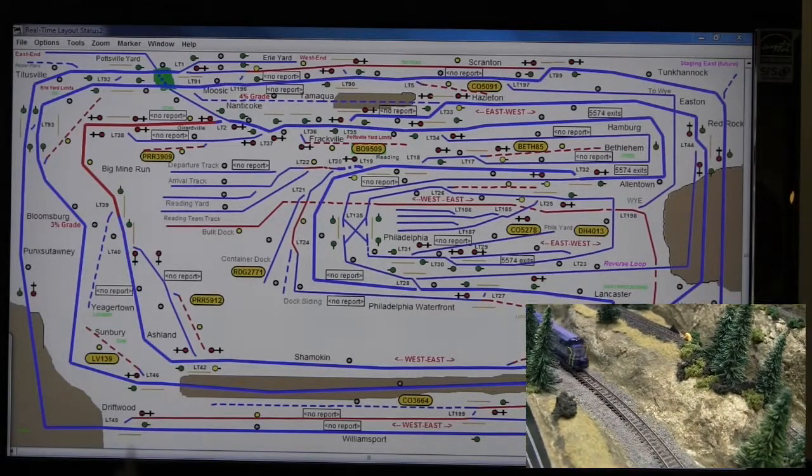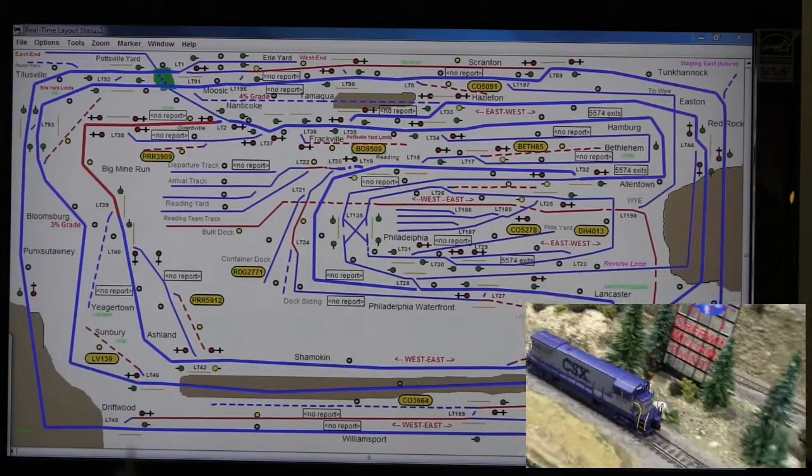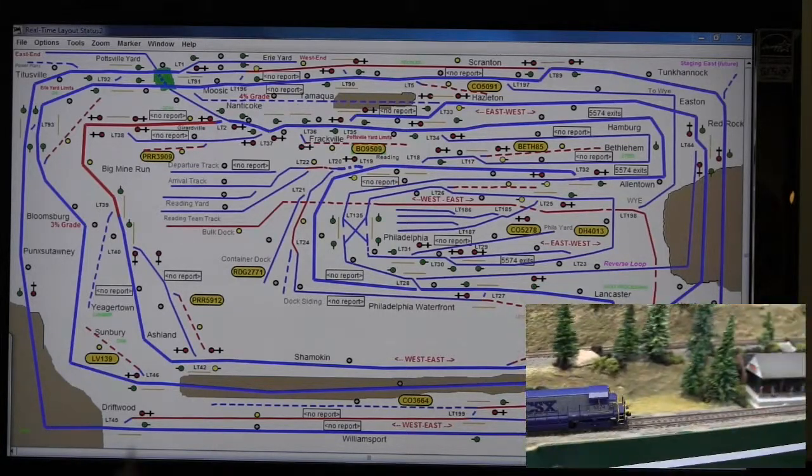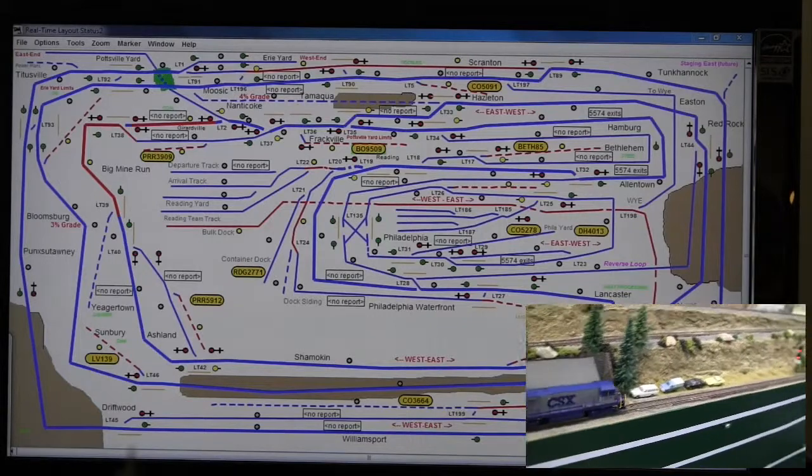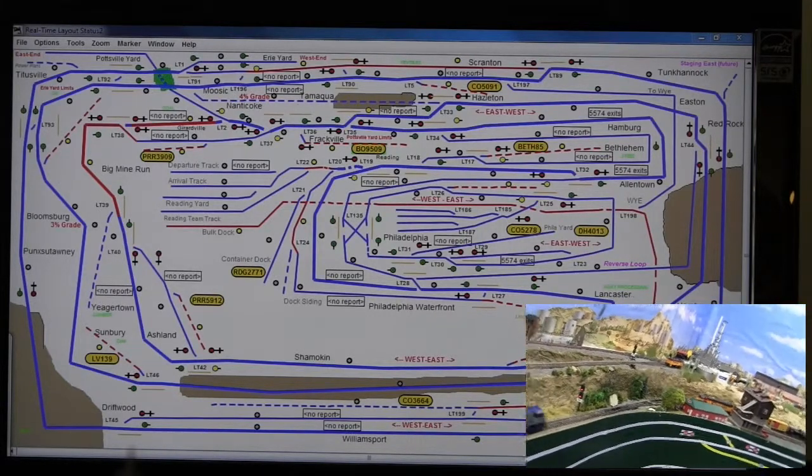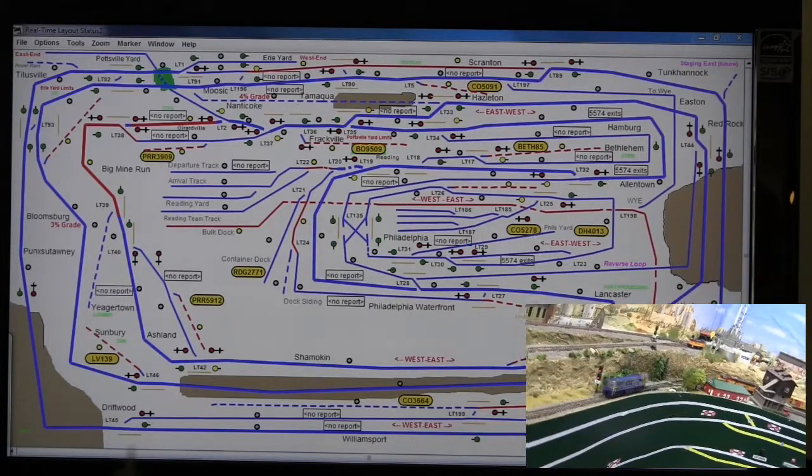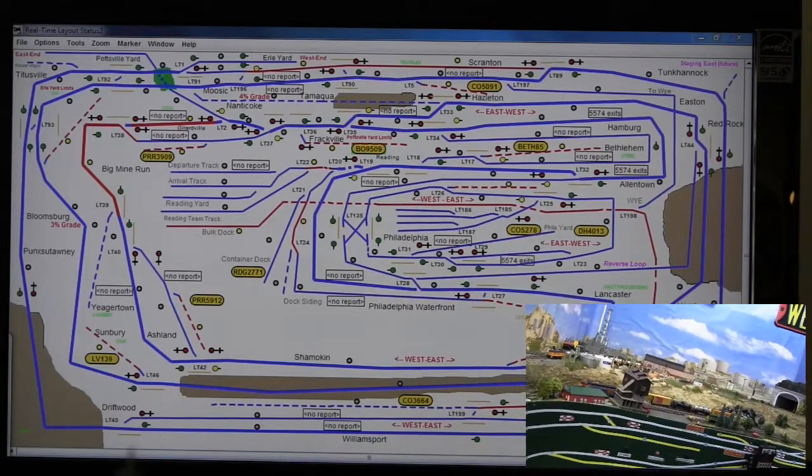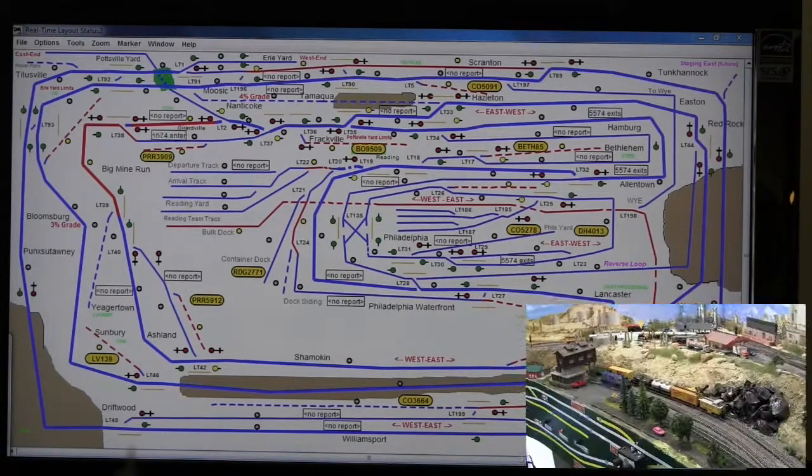And we're going to have to hold up because it looks like we've got a turnout to adjust at Gerardville. We see the red light at Gerardville. Looks like it's now green so we can proceed on the alternate through Gerardville.